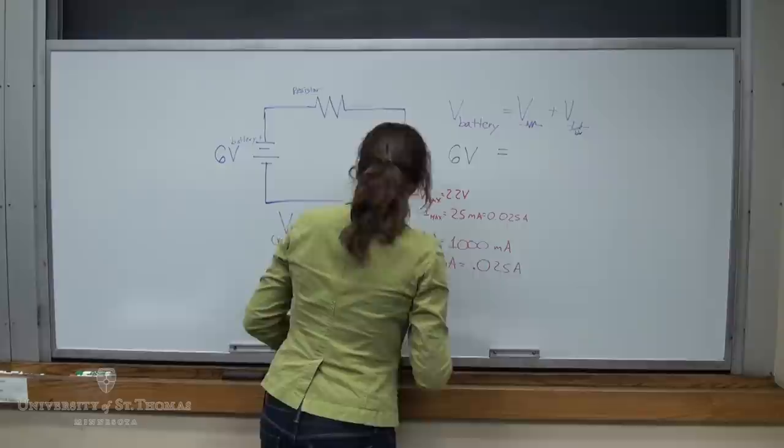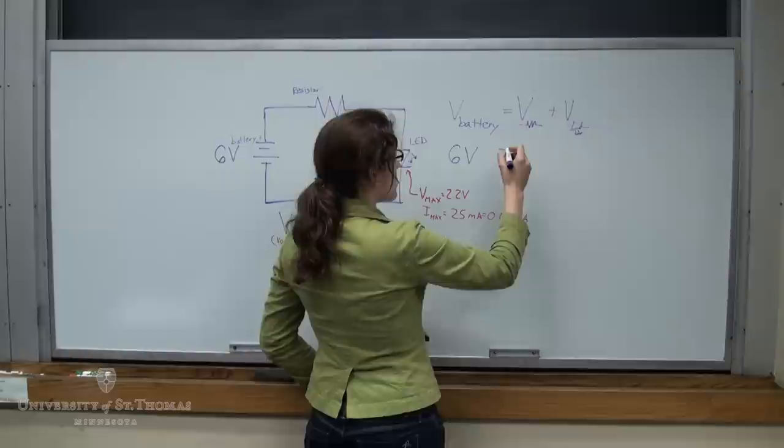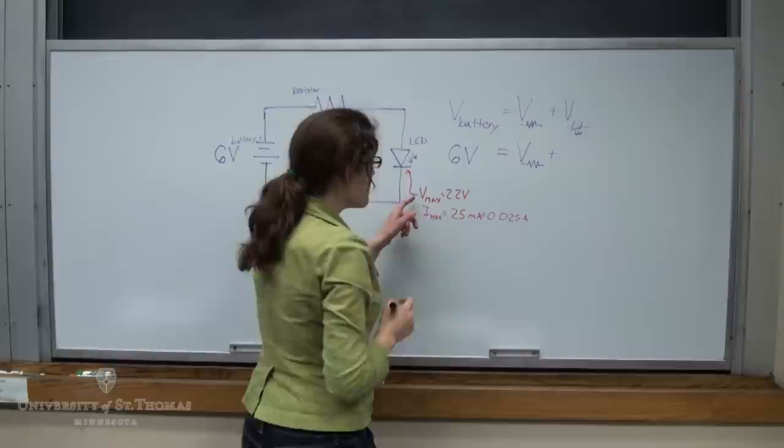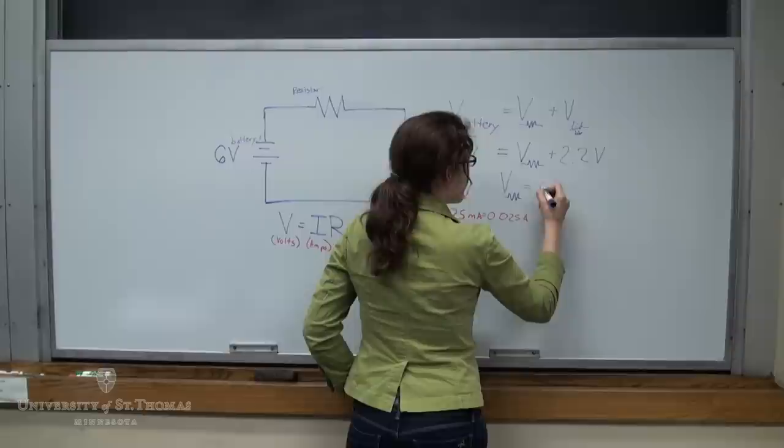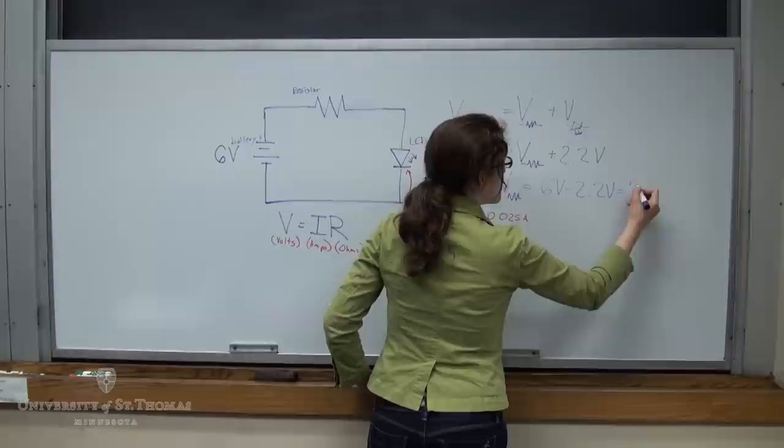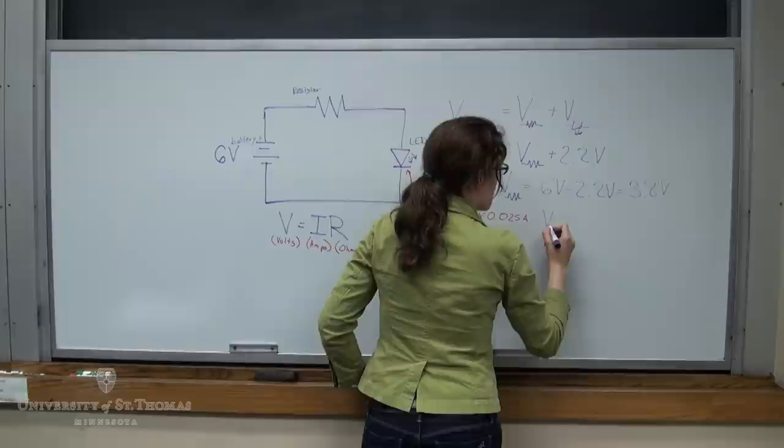Okay. So now we know that our 6 volts is going to have to be equal to the voltage drop across the resistor, plus our maximum voltage drop across our LED, so 2.2 volts. That means that we need our voltage across the resistor, our drop, to be equal to 6 volts minus 2.2 volts, which is equal to 3.8 volts. So we'll put this in a little box to remind us that we want V across the resistor to be equal to 3.8 volts.